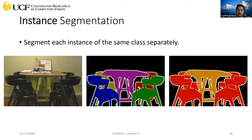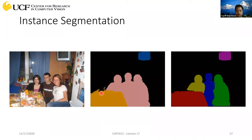Next we look into instance segmentation, where we differentiate between the two chairs — chair number one and chair number two. The segmentation map in the center shows instance segmentation: this is one instance of chair, and this is the second instance. You can differentiate between the two. Here's another example where this is the image and the semantic segmentation map obtained from pixel-wise classification — each pixel tells you which category it belongs to.